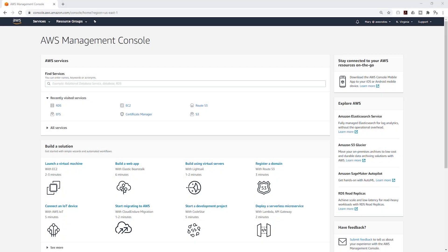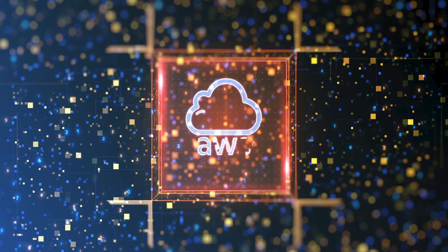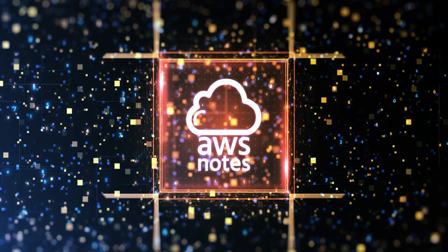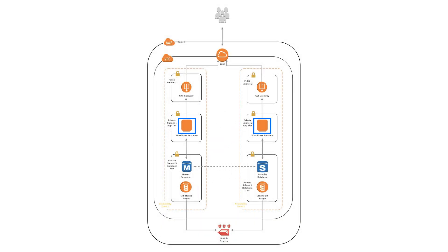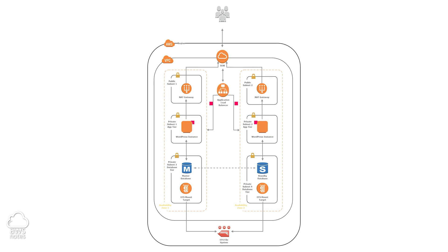Hello, in this lecture we are going to be creating an application load balancer and we are going to be connecting it to our website. Before we create the application load balancer, we are going to launch two EC2 instances in the private subnet app tier in both availability zones. Then we will create our application load balancer and connect those two EC2 instances to the target group.